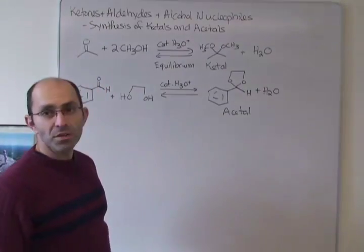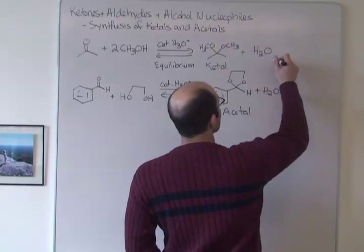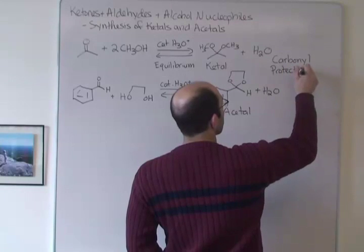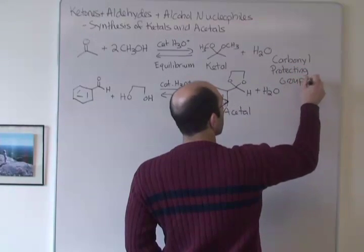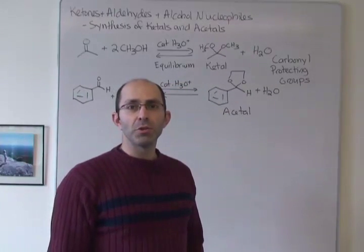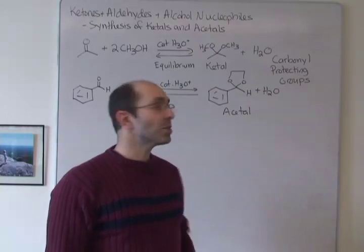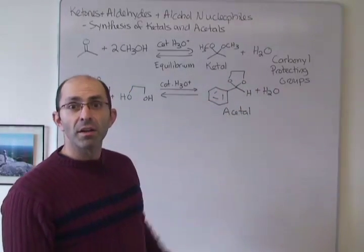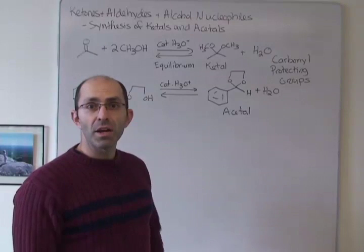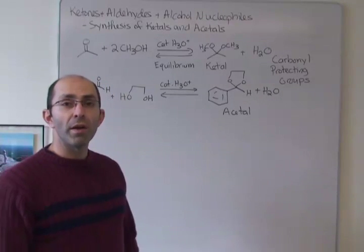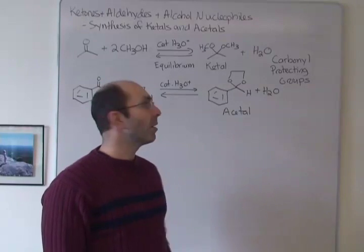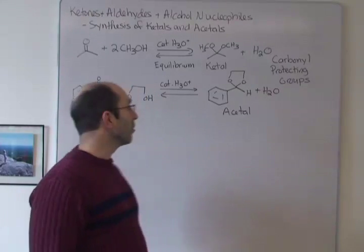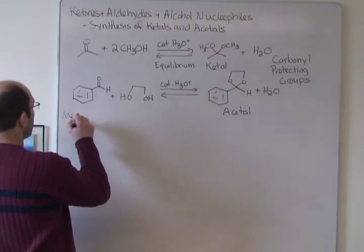The primary use of ketals and acetals is as carbonyl protecting groups. That means if you want to run a reaction in which you use a strong nucleophile — some sort of Grignard reaction — somewhere else in your molecule, you can protect this carbonyl as a cyclic ketal or acyclic acetal. That will prevent any of those carbonyl reactions we've been talking about, because these compounds are not reactive that way. The more interesting thing for us is what the mechanism looks like for one of these reactions.